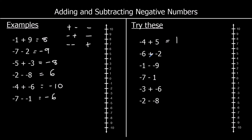The second one: negative 6 plus a negative 2. Plus a minus is the same as minus, so negative 6 take away 2. Negative 6 is our starting point, down 2 — that's negative 8.